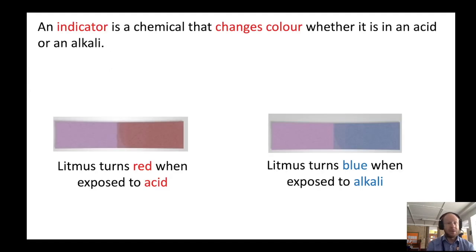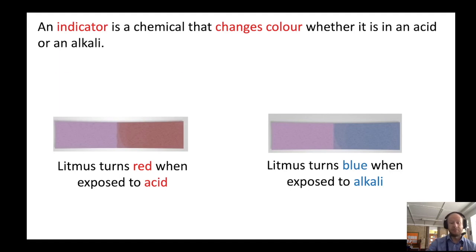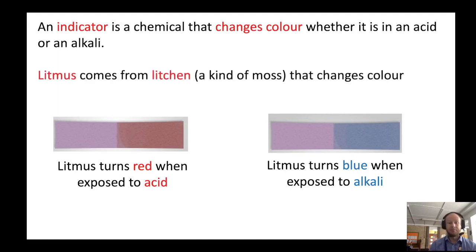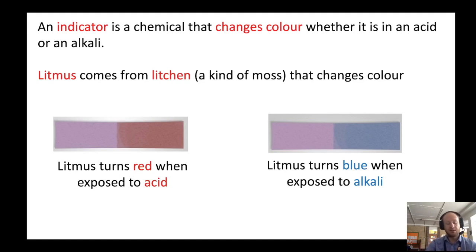An indicator is just a chemical that changes color depending on whether it's in an acid or an alkali. Litmus will turn red when exposed to an acid and blue when exposed to an alkali. Litmus comes from lichen — it's a kind of moss that changes color based on whether it's acidic or alkaline.